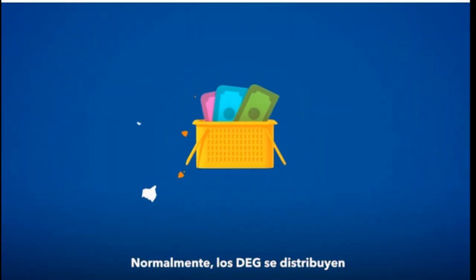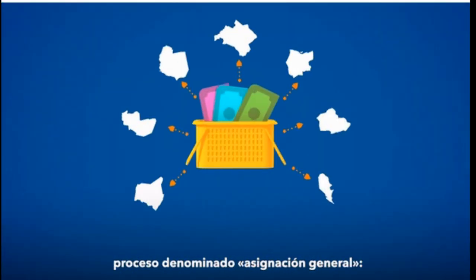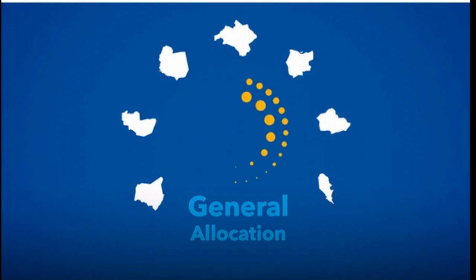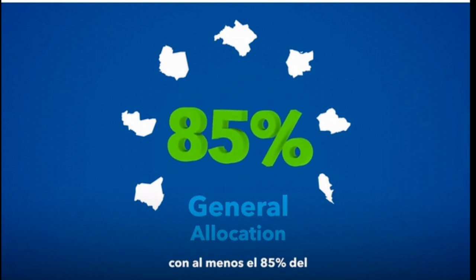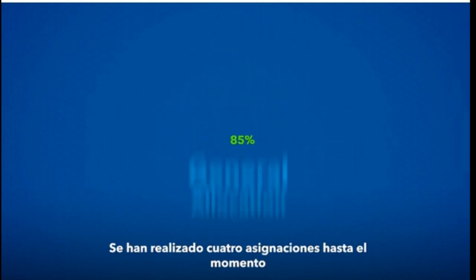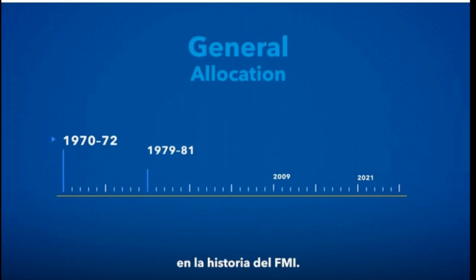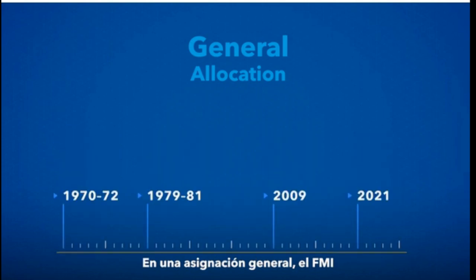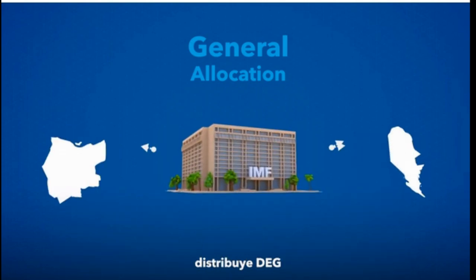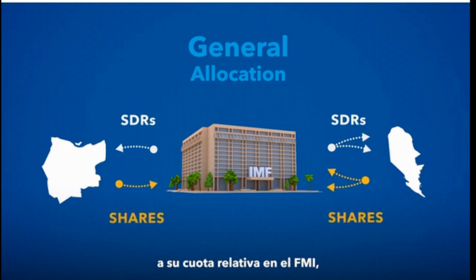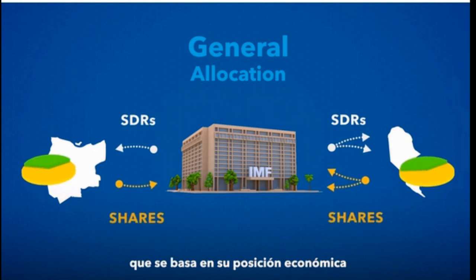SDRs are normally distributed among members through a process called a general allocation, a decision that requires approval by the IMF Board of Governors with at least 85% of the total voting power. There have been four so far in the history of the IMF. In a general allocation, the IMF distributes SDRs to member countries in proportion to their quota shares at the IMF, reflecting their relative economic standing in the world economy.